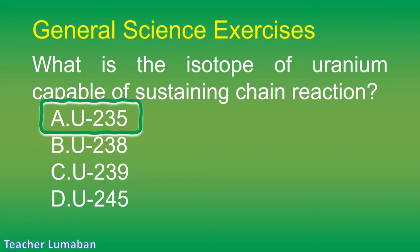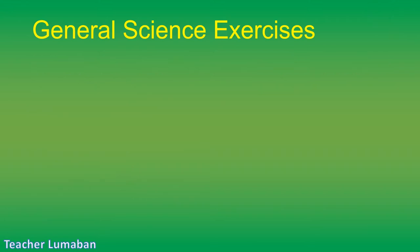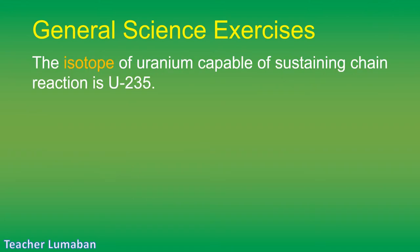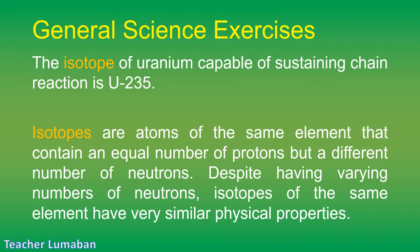The correct answer is Letter A: U-235. The isotope of uranium capable of sustaining a chain reaction is U-235. Isotopes are atoms of the same element that contain an equal number of protons but a different number of neutrons. Despite having varying numbers of neutrons, isotopes of the same element have very similar physical properties.